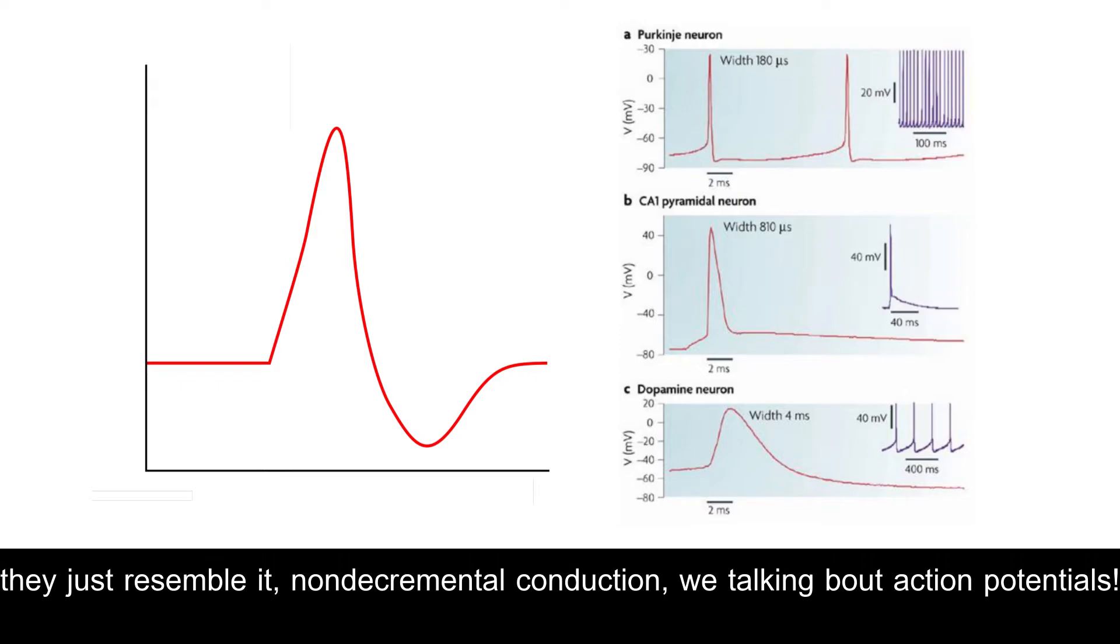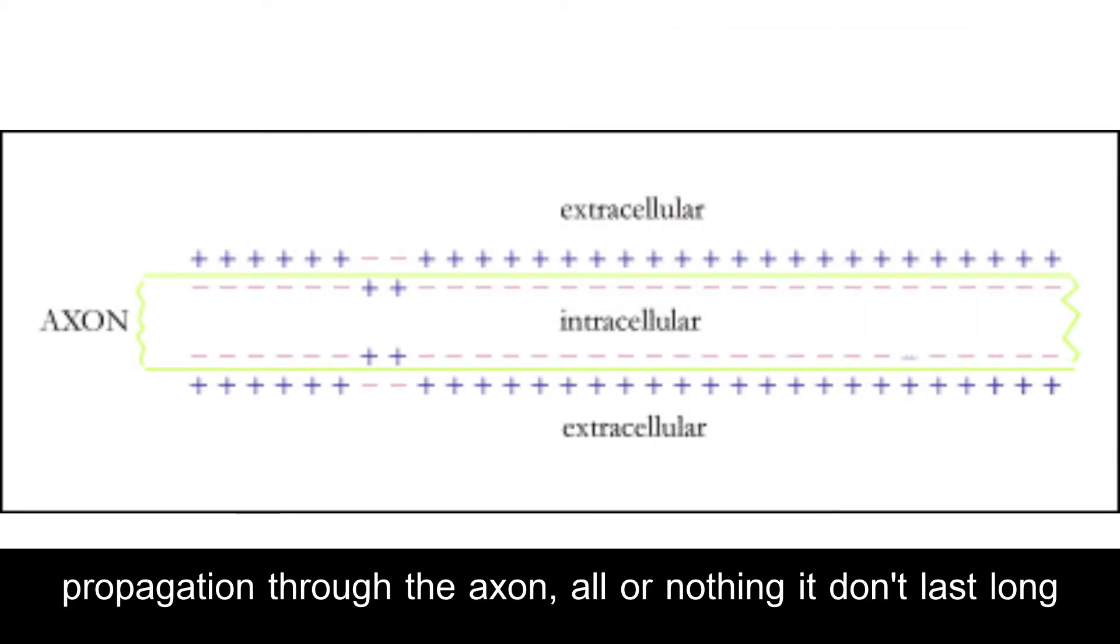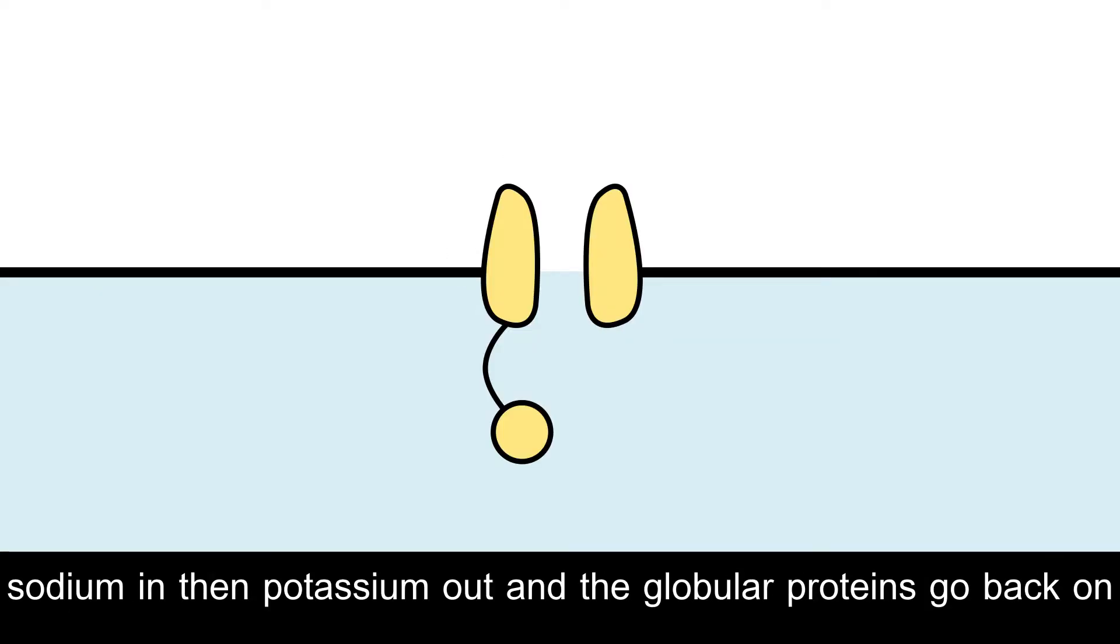Non-decremental conduction, we talking about action potentials. Propagation through the axon, all or nothing, it'll last long. Sodium and then potassium out, and the globular proteins go back on.